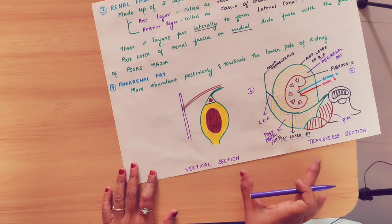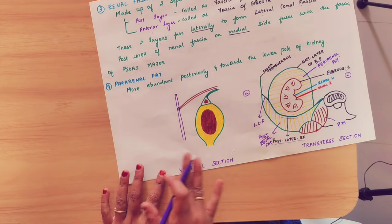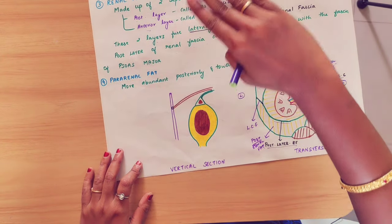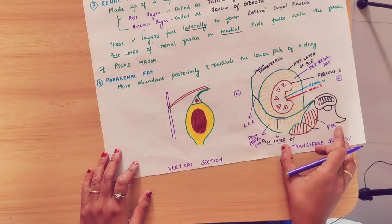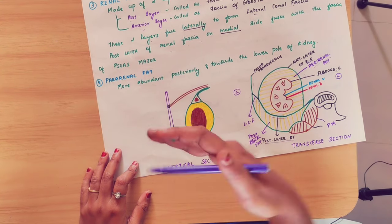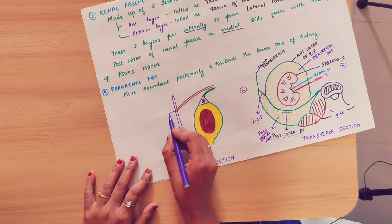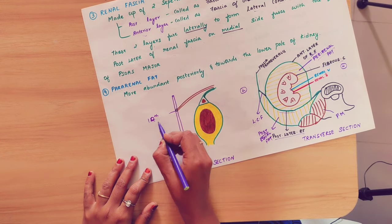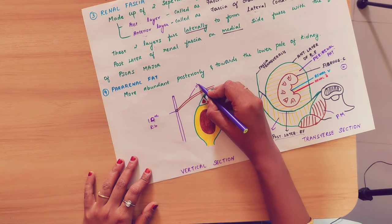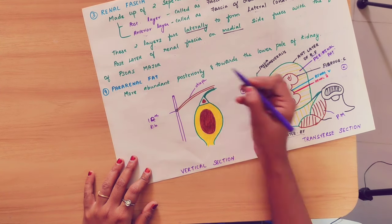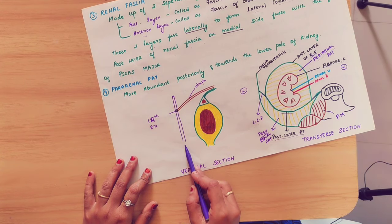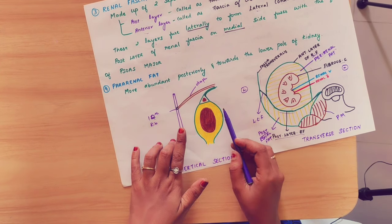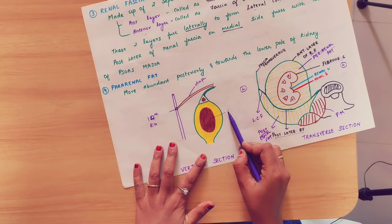You also have to learn the vertical section of the covering. In the vertical section, we can see the twelfth rib, the diaphragm, and the vertebral column in relation to the kidney.